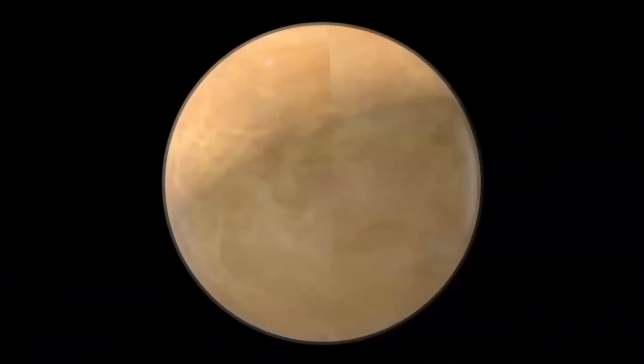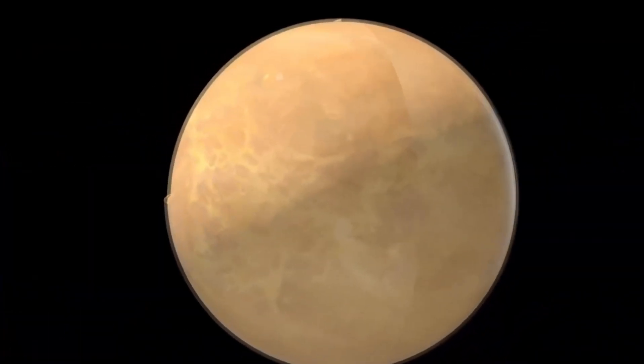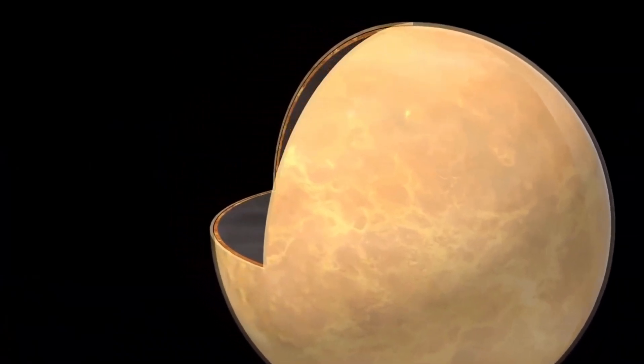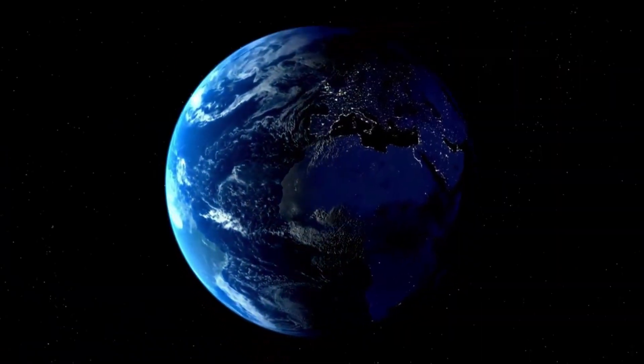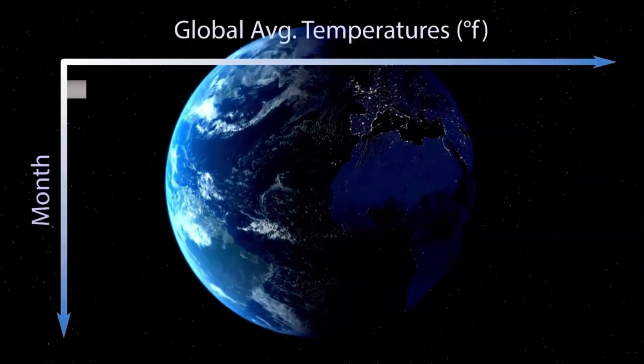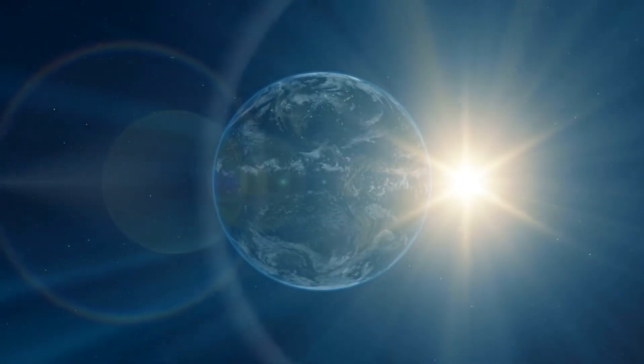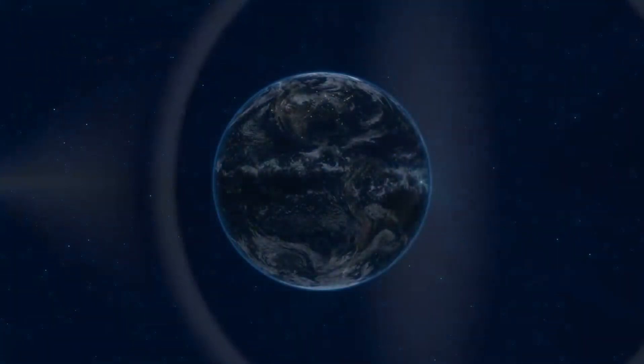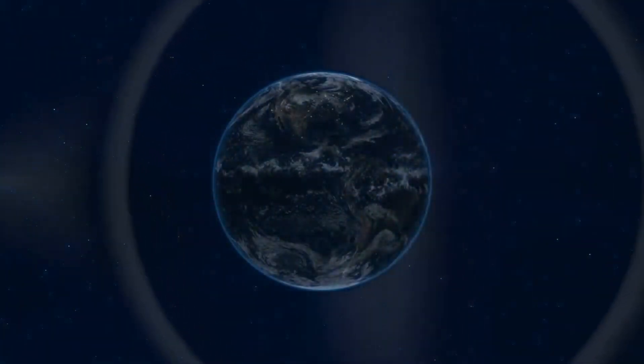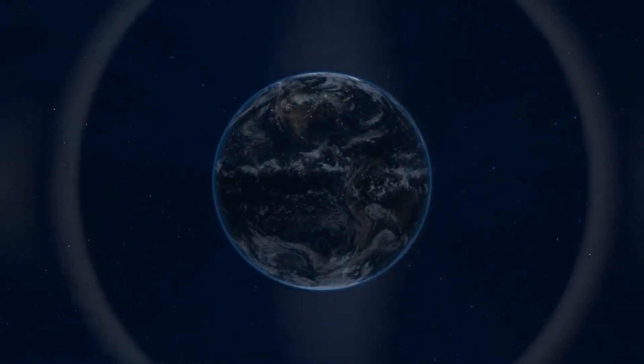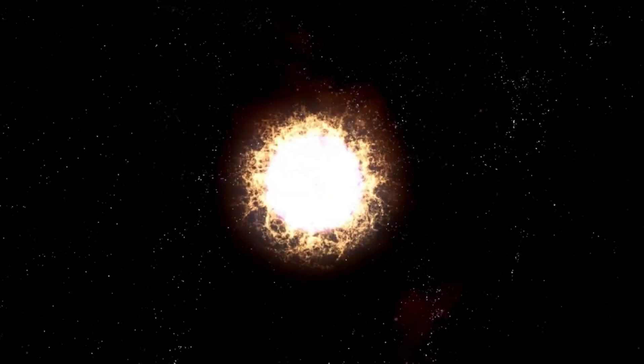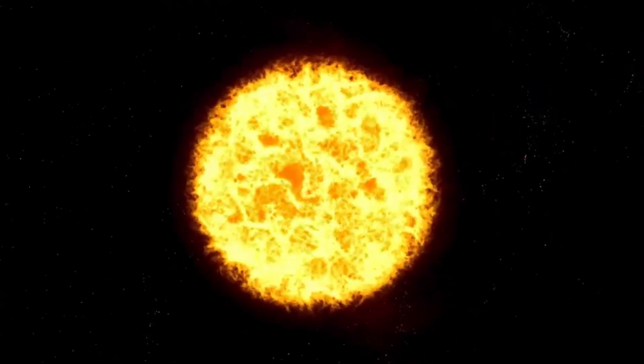Our fixation on Earth-like planets might limit our research. The obsession with finding planets that resemble Earth might actually limit our ability to discover more habitable worlds. Scientists have traditionally focused on finding planets within the so-called habitable zone of stars, where conditions are believed to be similar to those on Earth. However, this geocentric and anthropocentric view may hinder us from identifying planets that are more habitable than Earth.